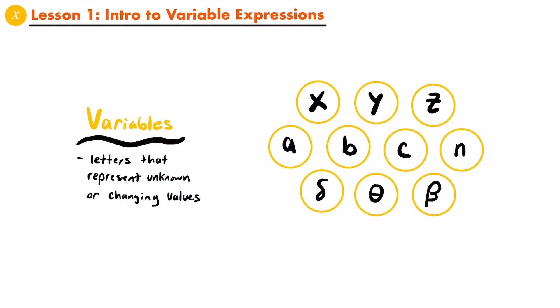Examples of that would be these three letters down here — you don't need to know what those are, I just have them here for show. The most common letters that you will see in algebra are x, y, z, a, b, c, and n. But as I've said, you can really use any letter of the alphabet to represent an unknown or changing value.